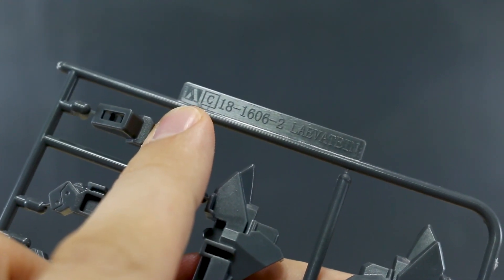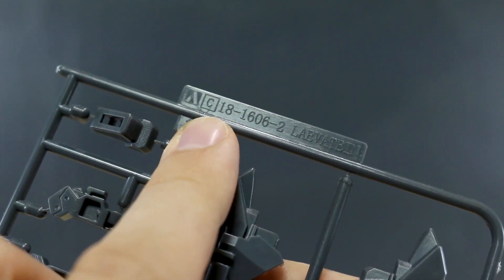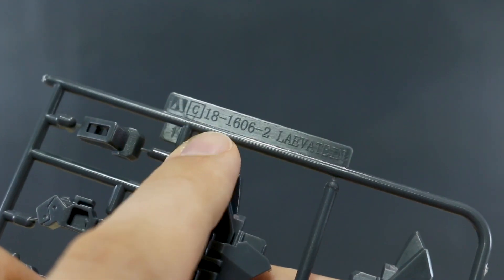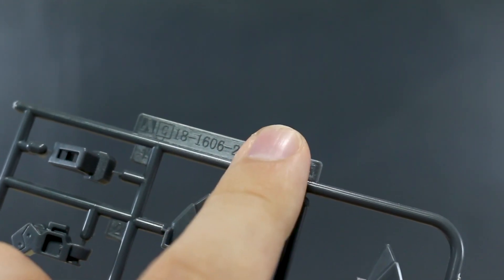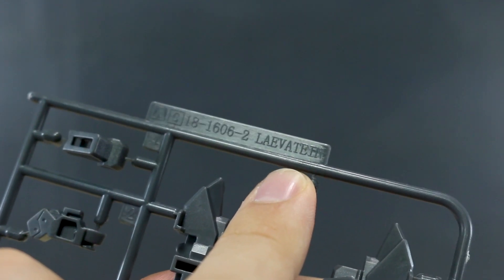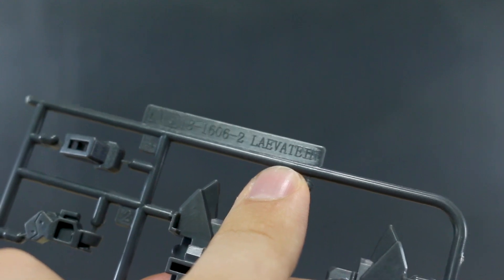One thing I just want to point out is the runner markings for this. So you can see it's got the little Aoshima A logo there. And then that's the runner there, C. Very hard to see, very small. So you definitely maybe want to like take some masking tape, wrap a bit of masking tape on here, write a big C on it. It's a lot easier to see when you're just having to go through the runners. And you can see there's just the Laevatein name there in English.